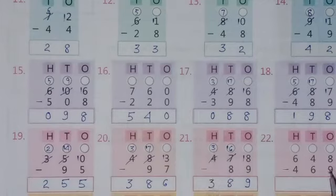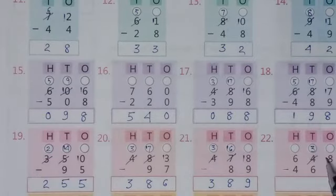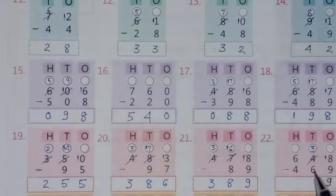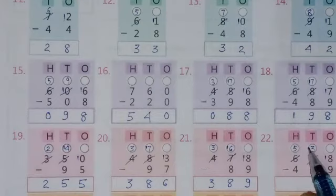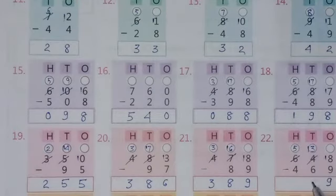Question number 22: 8 minus 9 is not possible, so borrow from this digit — this will become 3 and here will be 18. Now 18 minus 9 equals 9. Then 3 minus 6 is not possible, so borrow from this digit — this will become 5 and here will be 13. Now 13 minus 6 equals 7, and 5 minus 4 equals 1.